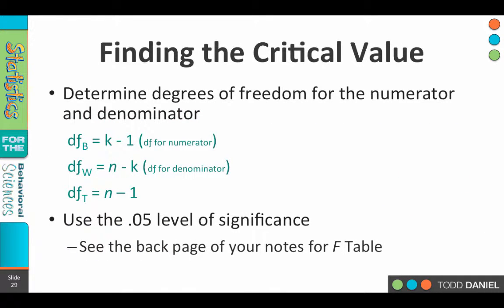The critical value we will find from the F-table, contained at the back of your notes. This time we will have more than one degree of freedom, so we consider the degrees of freedom between, the degrees of freedom within, and the degrees of freedom total. The degrees of freedom between is k minus 1. The degrees of freedom within is n minus k — that is the total number of subjects minus the number of treatments.